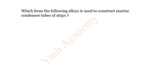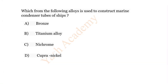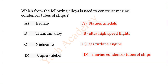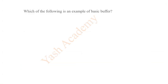Question 17: Which of the following alloys is used to construct marine condenser tubes of ships? Options: A) Bronze, B) Titanium alloy, C) Nichrome, D) Cupronickel. Bronze is used for statues. The correct answer is D) Cupronickel.